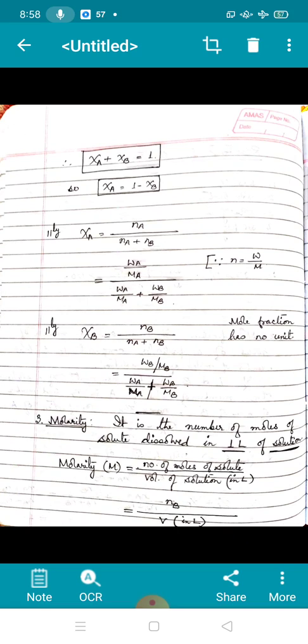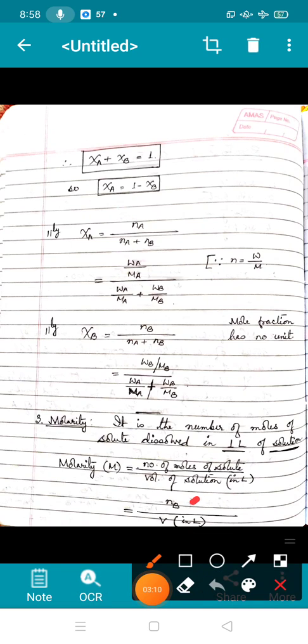Then comes molarity. It is the number of moles of solute dissolved in one liter of solution. So molarity is equal to number of moles of solute divided by volume of solution, but make sure the unit of volume has to be liters. If we replace the symbols here, n_B stands for number of moles of solute and V is the symbol for volume of solution in liter.